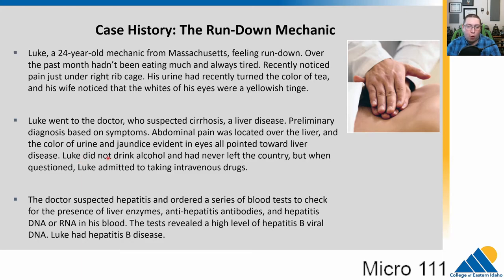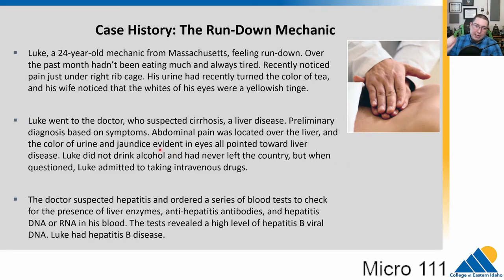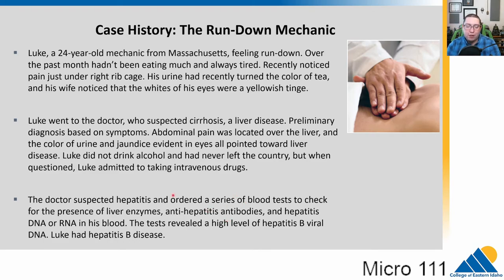Luke says he does not drink alcohol, which can cause cirrhosis by damaging liver cells with excess consumption. He's never left the country, which is important because many tropical diseases can cause these symptoms. He does finally admit to having taken intravenous drugs. The doctor suspects hepatitis, which is a viral infection. They do blood tests looking at liver enzyme levels, anti-hepatitis antibodies, and hepatitis genetic material — DNA or RNA. The test reveals high levels of hepatitis B viral DNA, so he has hepatitis B disease caused by a virus.